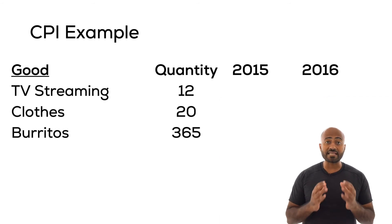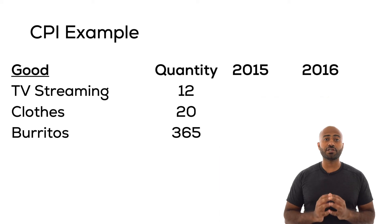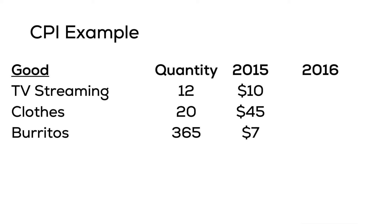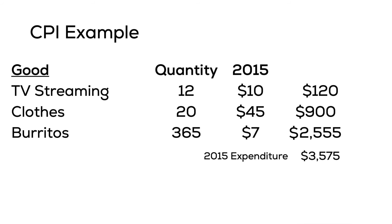Now that we know the basket of goods, we need the price of each good in 2015. The price of TV streaming service is $10, clothing is priced at $45 each, and burritos at $7 each. The final step is to calculate the total expenditure on the basket of goods for 2015. To do that, we calculate total expenditure on TV streaming by multiplying quantity by price: 12 times $10.